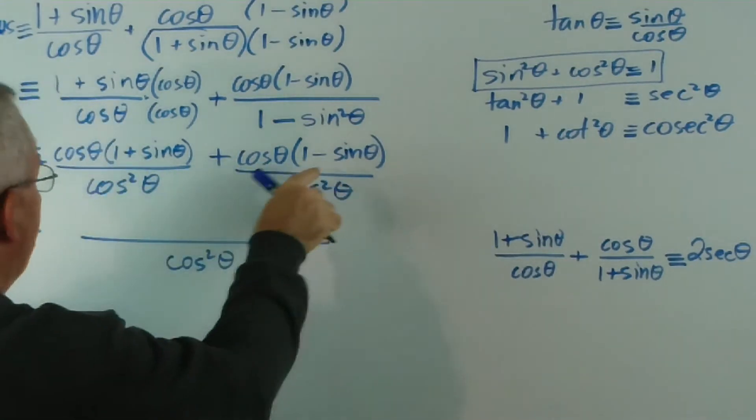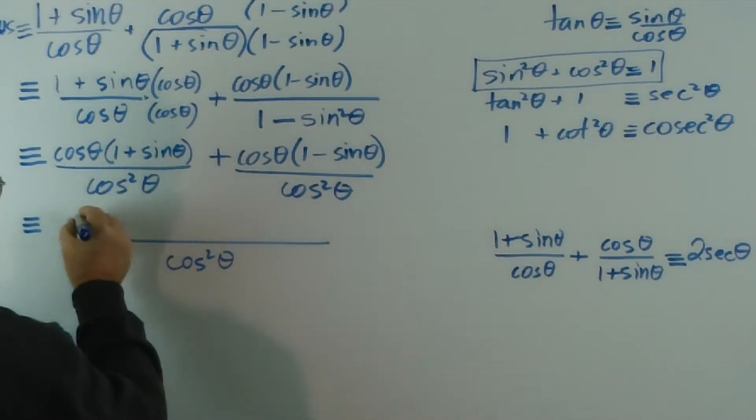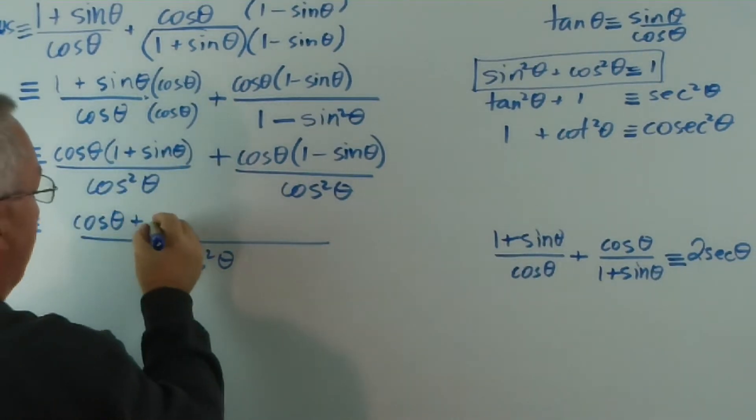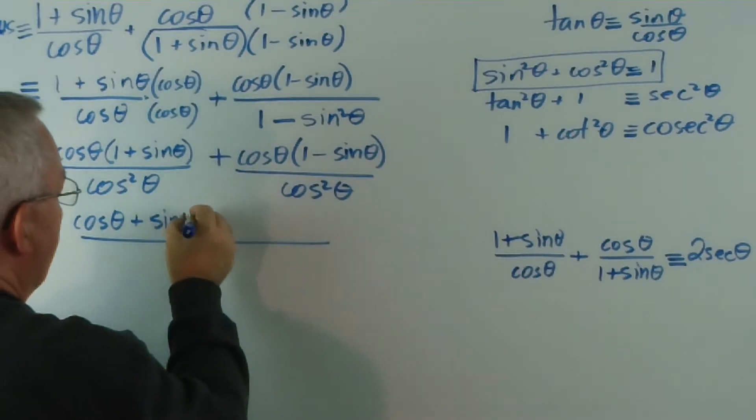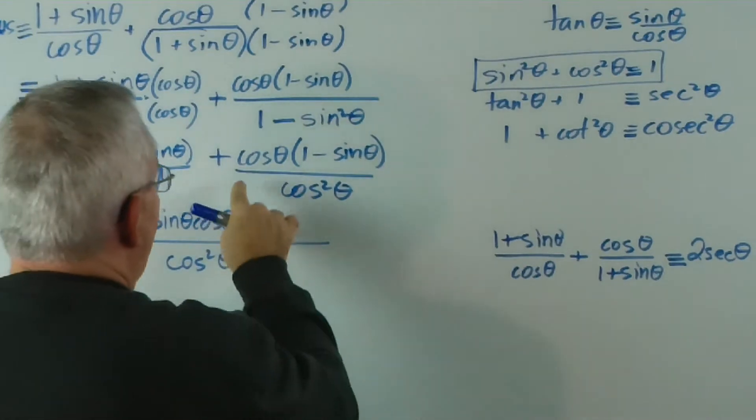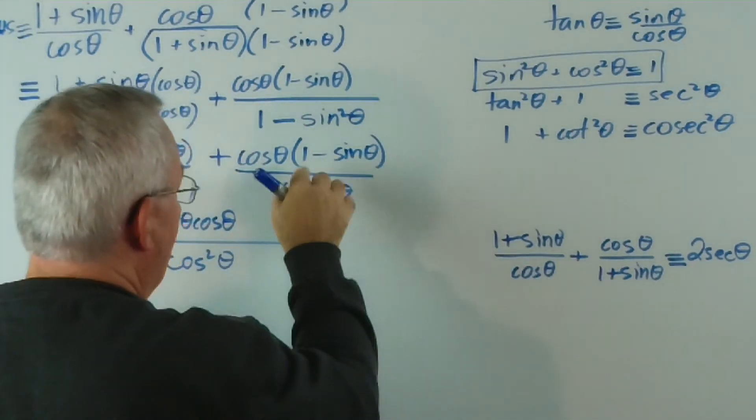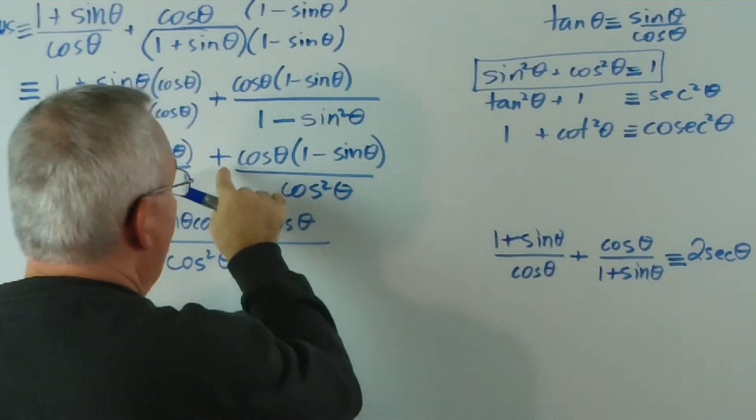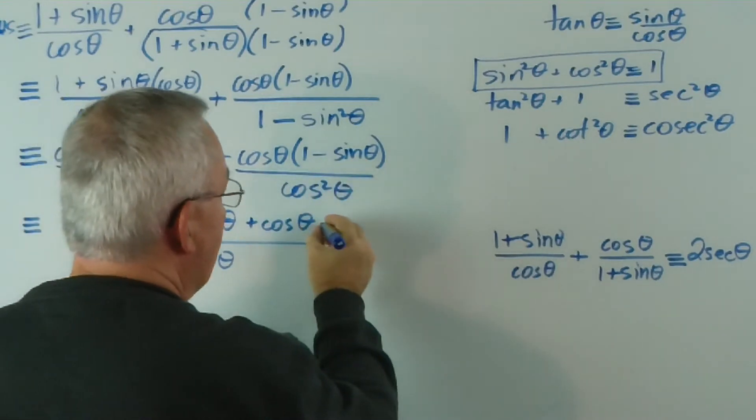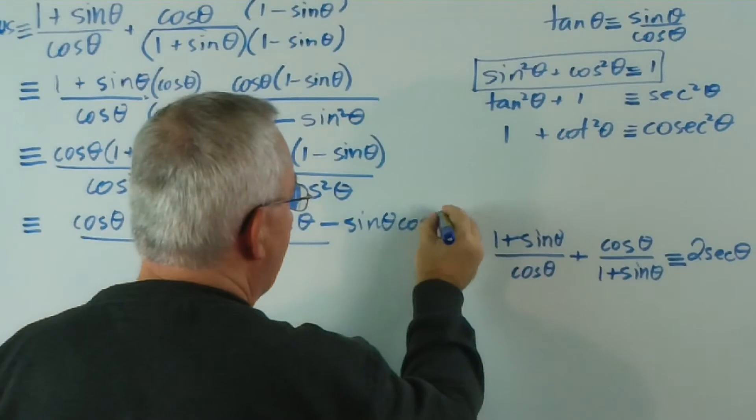And let's expand. Cos theta times this. Cos theta times 1 is cos theta. Cos theta times sine theta, I'll put the sine first. Sine theta cos theta. And here we're adding. So we've got a plus cos theta times 1. And we've got a positive cos theta times a negative sine theta. So it's going to be negative sine theta cos theta.